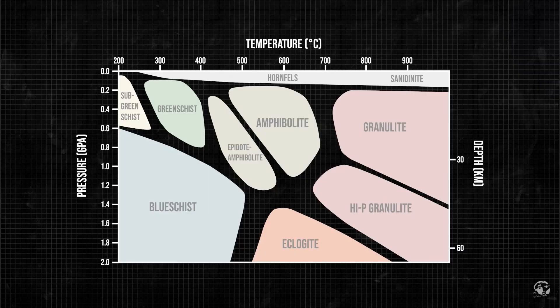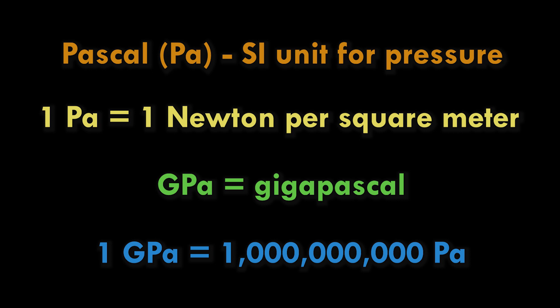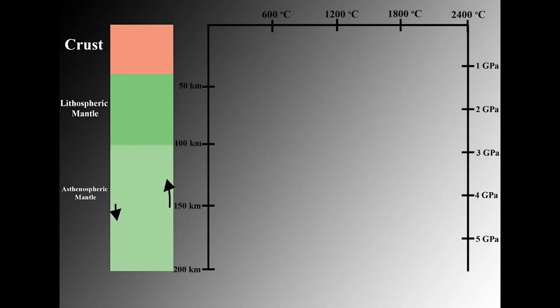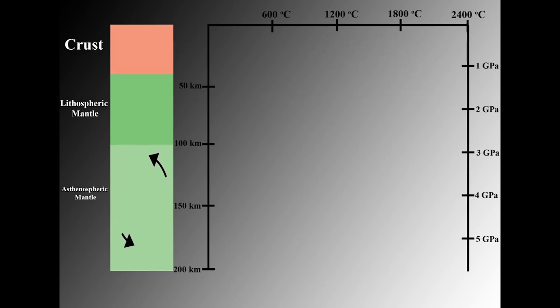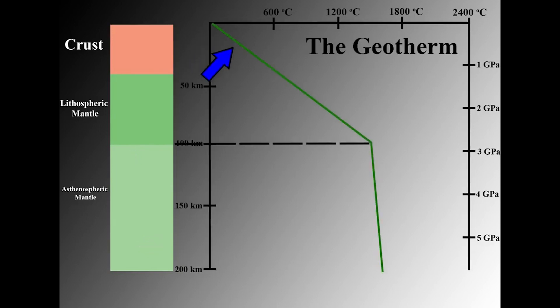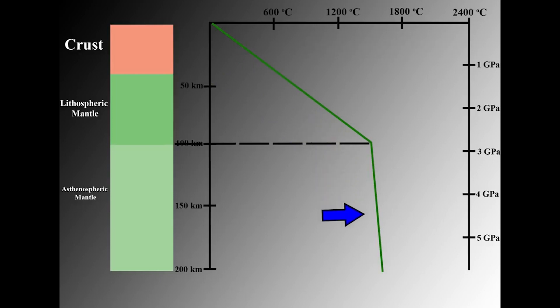Most geoscientists think of pressure in terms of gigapascals. A pascal is the SI unit of pressure and is equal to 1 newton per square meter. The intense pressures inside the earth require that we add the giga, or 1 billion, prefix. Finally, a temperature scale can be added. And now we can plot a line that describes how temperature increases with depth and pressure inside the earth. This line is called the geotherm, which identifies the expected temperature at a given depth based on these pressure, depth, and temperature relations.